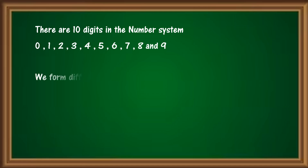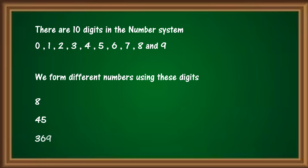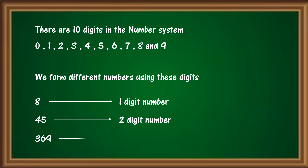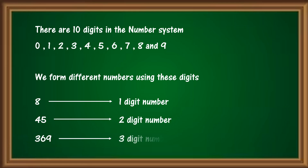We form different numbers using these digits. For example, 8, 45, and 369 — where 8 is a one-digit number, it has only one digit. 45 is a number formed with two digits, so it is a two-digit number, and 369 has three digits, so it is a three-digit number.